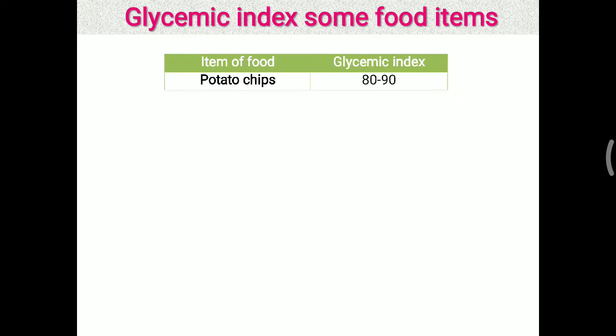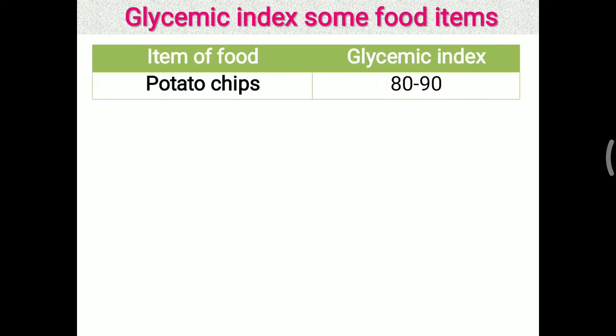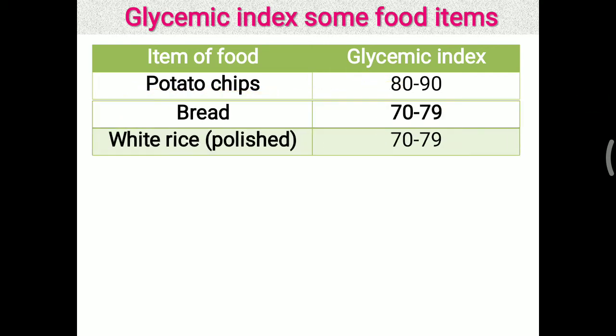The glycemic index of some particular foods is given here. For potato chips, which are most commonly used as a fast food component, the glycemic index is 80 to 90 — comparable to 50 grams of glucose. 50 grams of glucose has a glycemic index of 100, the highest. The second highest is potato chips at 80 to 90.